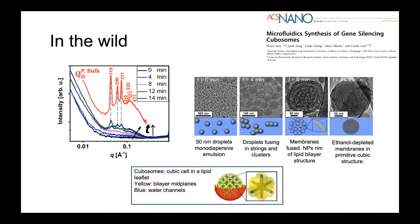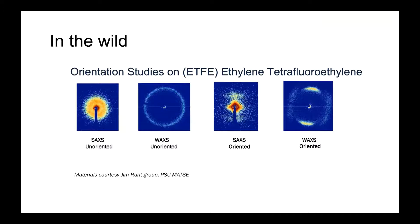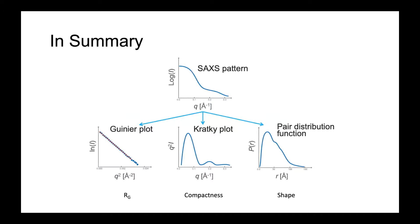A final example comes from the Jim Runt group at Penn State. They used the two-dimensional pattern to study orientation, specifically doing an orientation study on ethylene tetrafluoroethylene. They had two samples — on the left, SAXS and WAXS patterns for an unoriented or unstretched sample, and on the right the same patterns for the stretched sample. As they stretched the sample, orienting it more, the scattering became more anisotropic, which they were able to back-calculate. SAXS can give you a multitude of different characteristic information from a single non-destructive experiment.